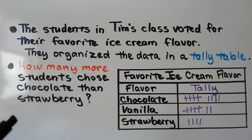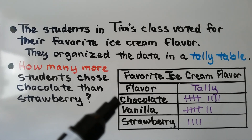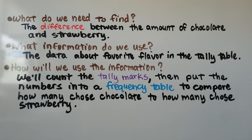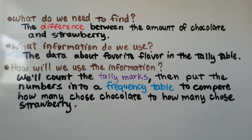The question wants us to find how many more students chose chocolate than strawberry. First, we ask ourselves what do we need to find — we need to find the difference between the amount of chocolate and strawberry. We'll use the data about favorite flavor in the tally table. We'll count the tally marks, then put the numbers into a frequency table to compare how many chose chocolate to how many chose strawberry.